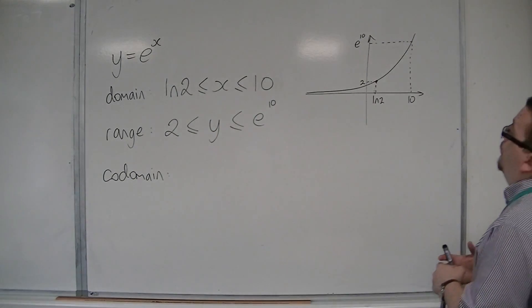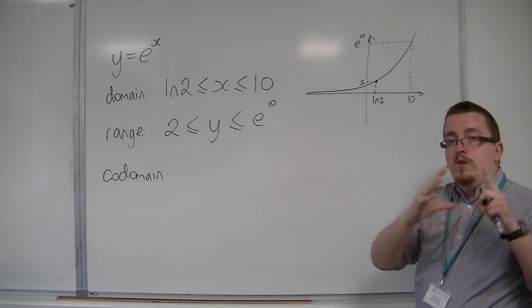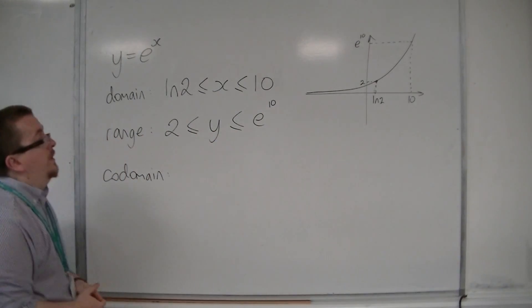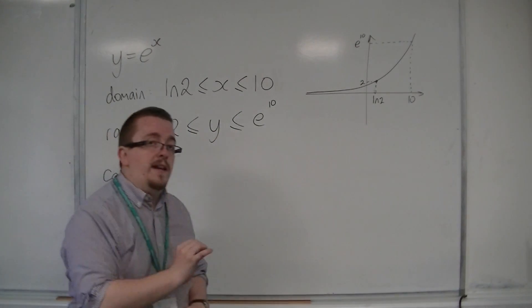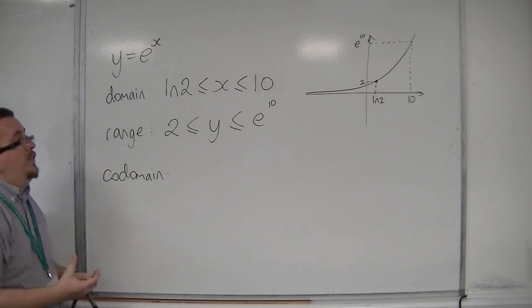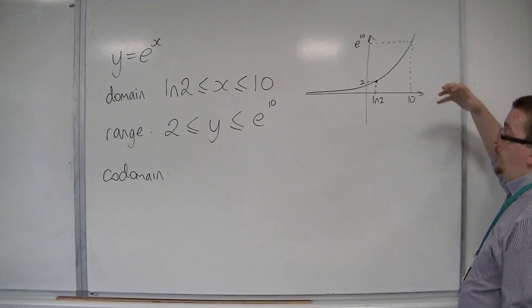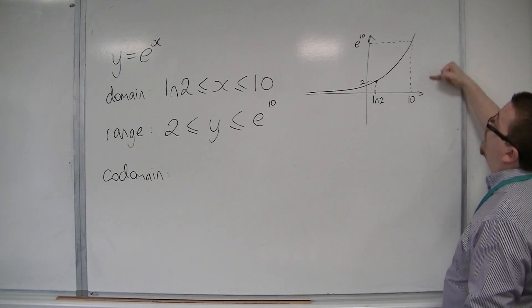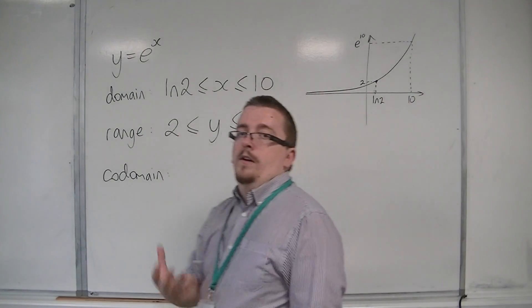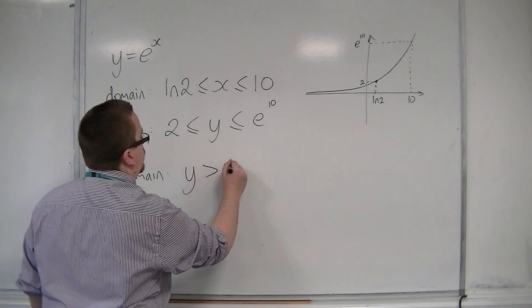So the greatest possible domain for y is equal to e to the x is any real number. So x can take on any real number, and subsequently the range, if x can take on any real number, is that the curve is y is greater than 0, because it is always above the x axis. So the codomain would be y is greater than 0.